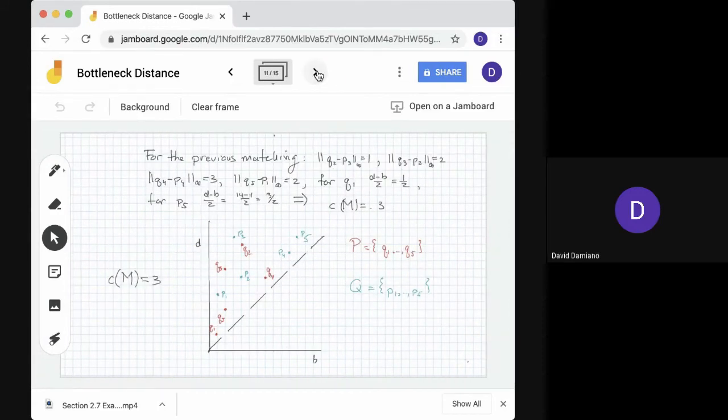Well, let's see what we get for our example. So here we have a calculation, Q2 minus P3. The L infinity distance is 1. For Q3 minus P2, it's 2. For Q4 minus P4, it's 3. For Q5 minus P1, it's 2. And finally, we have the distances to the diagonal. For Q1, it's 1 half. For P5, it's 3 halves. The largest of these values is 3. So the cost of M is 3.